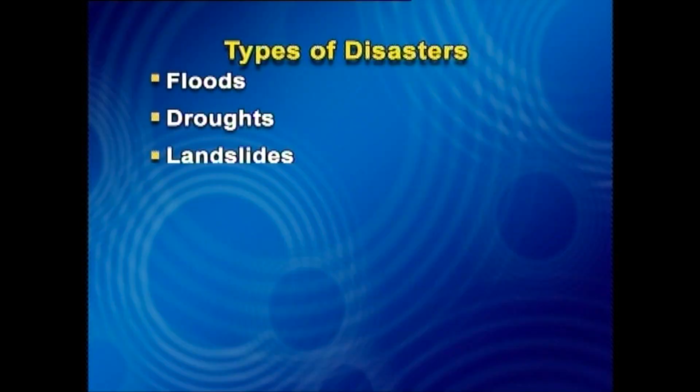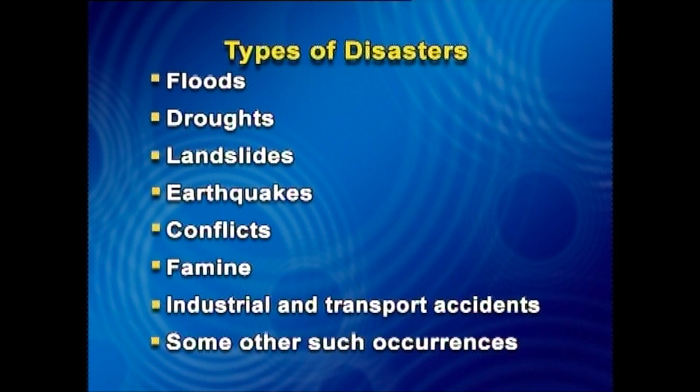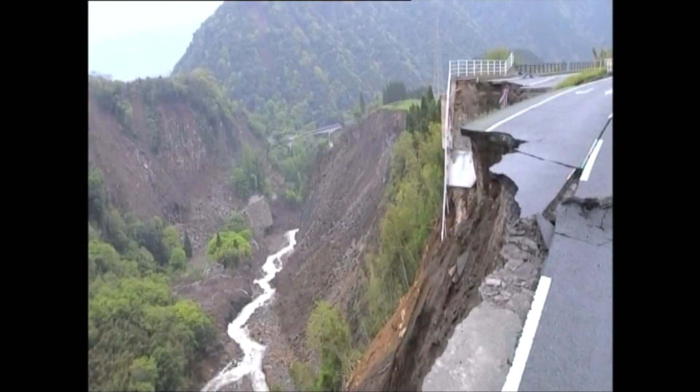To sum up, disasters occur in variable forms such as floods, droughts, landslides, earthquakes, conflicts, famine, industrial and transport accidents, and other occurrences. Disasters are usually divided into natural disasters and man-made disasters. Floods, droughts, landslides, and earthquakes are examples of natural disasters, whereas conflicts, famine, and industrial and transport accidents are referred to as man-made disasters. Natural and man-made disasters affect thousands of people each year, with the potential to cause catastrophic loss of life and physical destruction. They are often unexpected and can leave whole communities in shock.